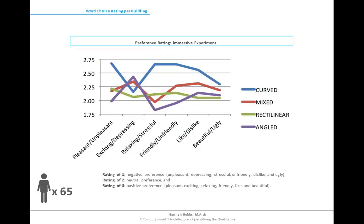Here we are looking at each bipolar adjective set across all contour categories to understand preference rating. Most participants felt that the curved building was pleasant, relaxing, and friendly. Interestingly, when deciding whether the curved building was exciting or depressing, participants overall viewed it more closely as neutral. While the preference ratings for the mixed design were not as high as the curved building, mixed building preference was still higher than neutral. Looking at the word set relaxing/stressful, overall preference for the mixed was viewed as more stressful, which could be due to limitations of the study. Preference for the rectilinear building was overall just above neutral, and for the angled building participants had less preference for it, except when it came to beautiful/ugly, where it was slightly more beautiful than the rectilinear building. It is interesting to note that as exciting increases, relaxing decreases — excitement is not always a good thing.